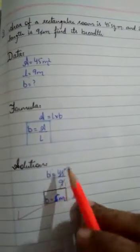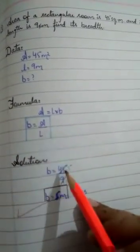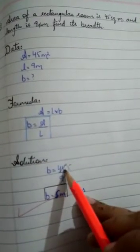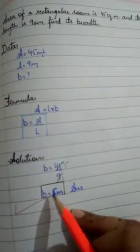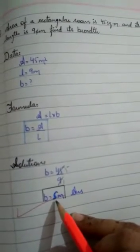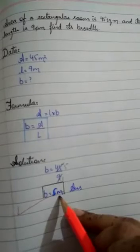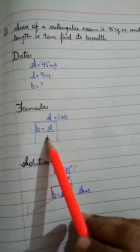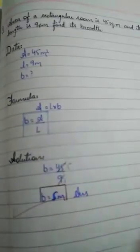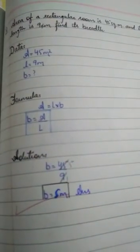B equals 45. A is 45 divided by 9. 9 times 1 is 9. 9 times 5 is 45. Breadth we have is 5 meters. These are the 3 questions we have to copy. After that, we will start a new exercise 13.3. So we will complete this. Thank you.